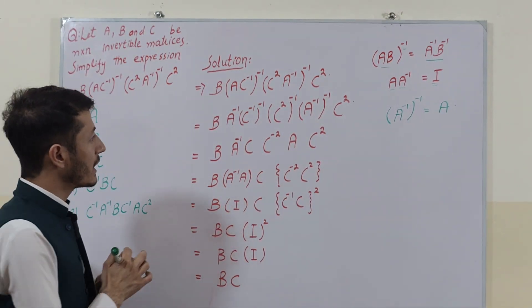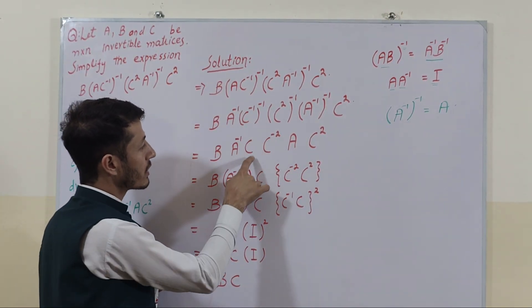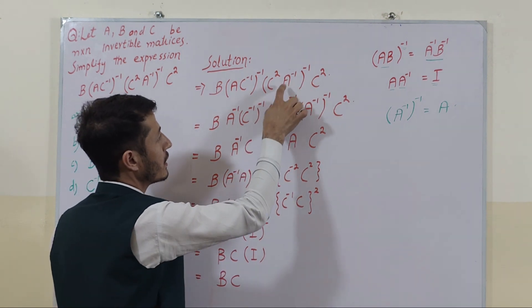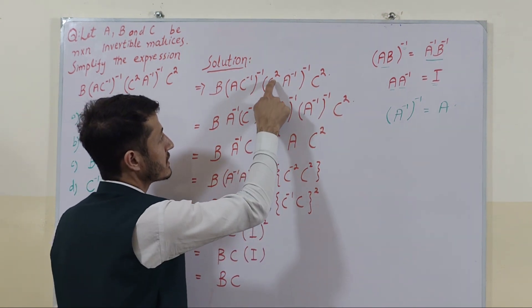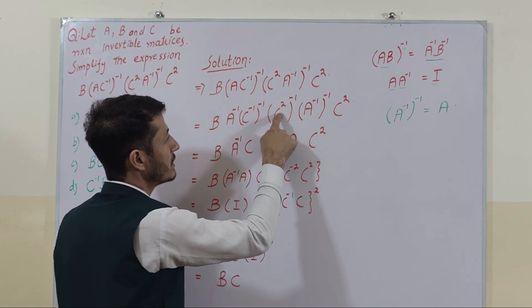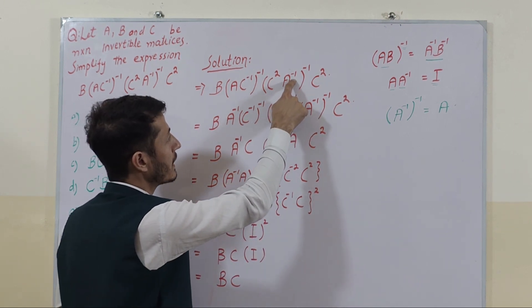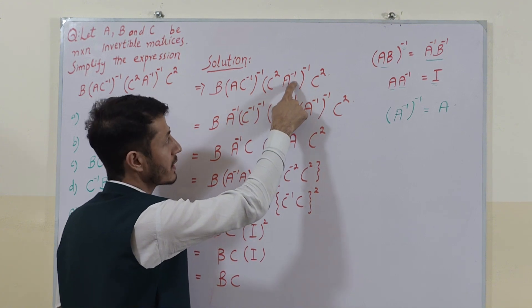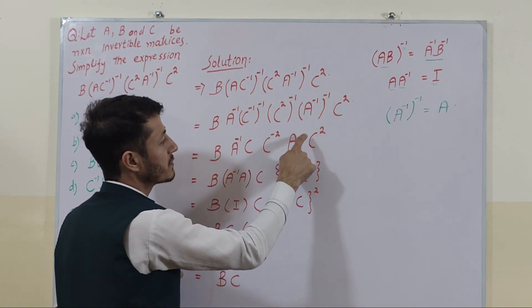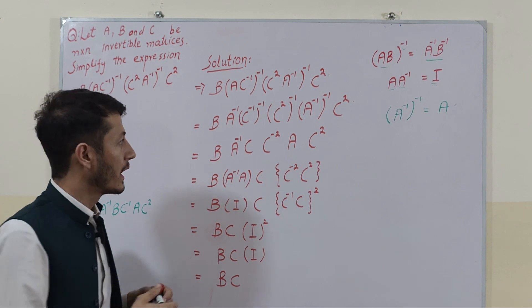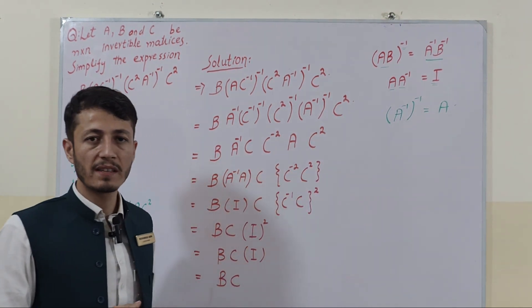So from here the C inverse whole inverse becomes C, and again here the inverse is applied, then it becomes C whole square becomes C power minus 2. And also here A power inverse power minus 1, it becomes matrix A, and again here the C remains as it is.